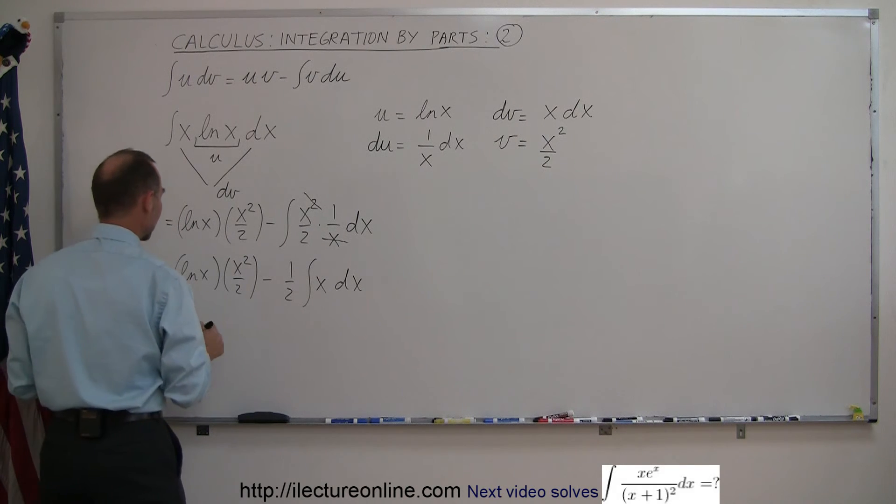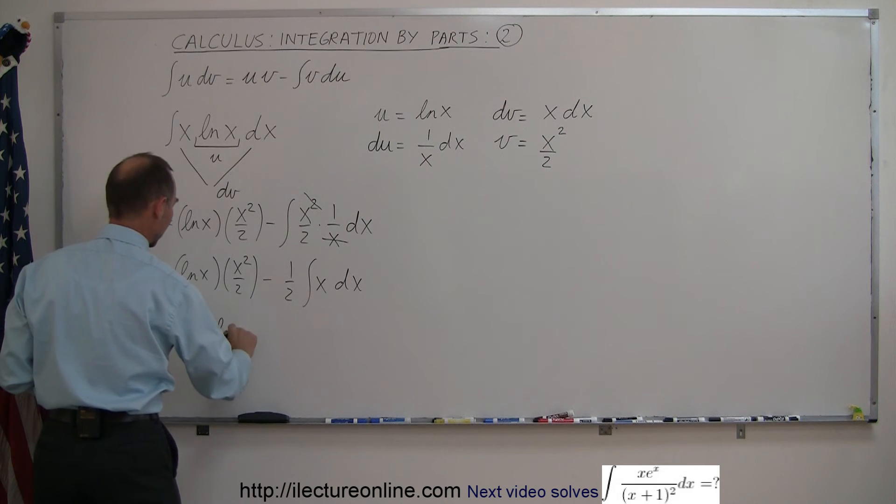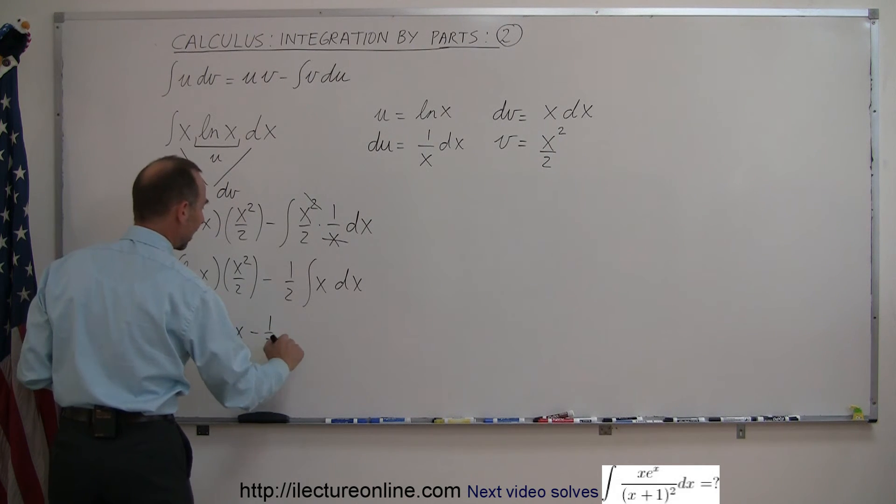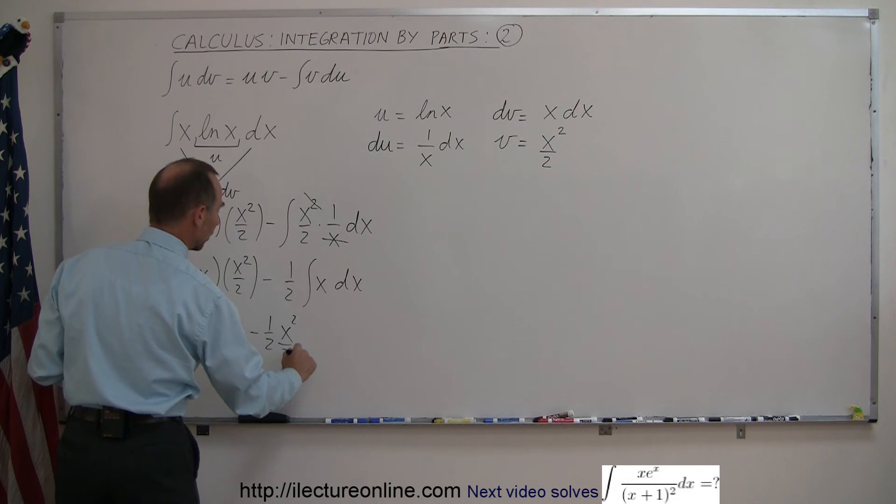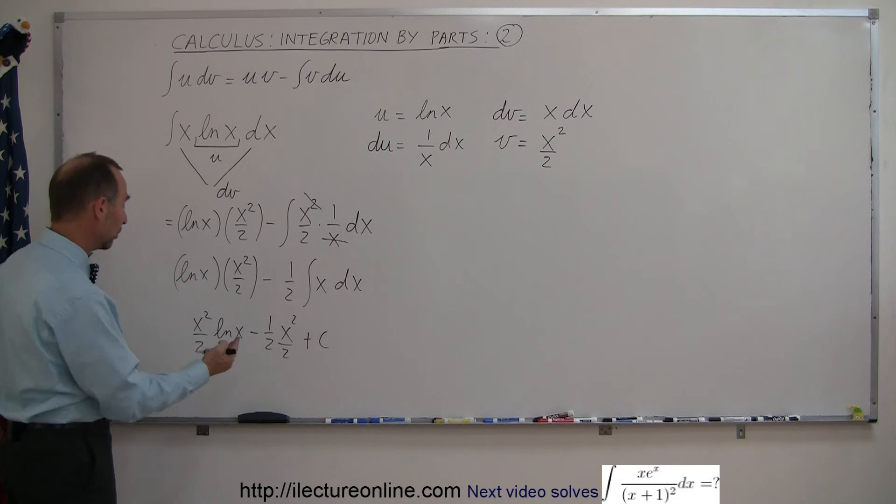So we can write this as x squared over 2 times the natural log of x, minus 1 half times, integrating this becomes x squared over 2, plus the constant of integration. And then if you want to pull out x squared over 2 from the first two terms,